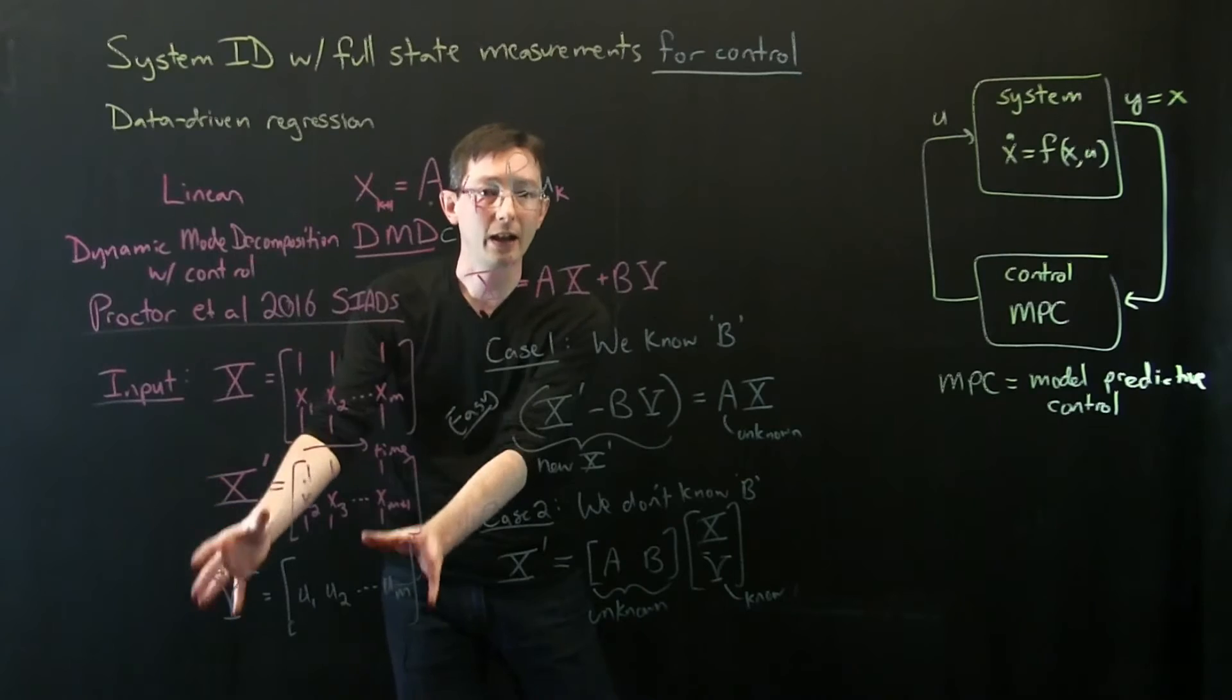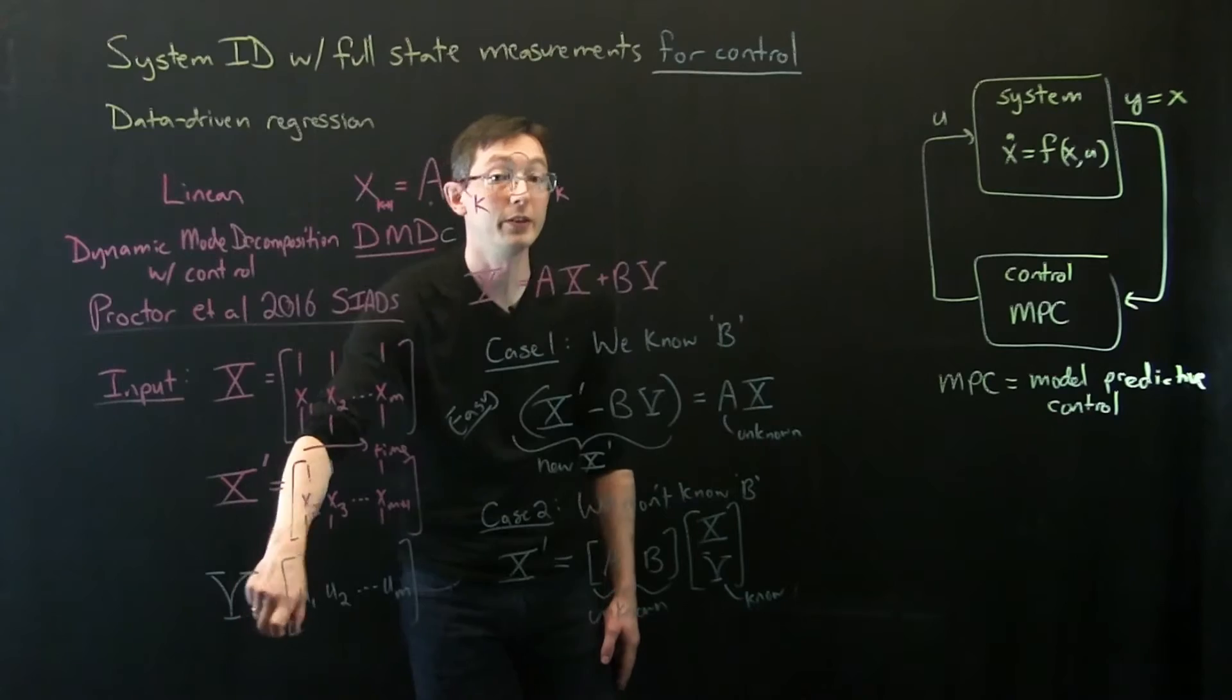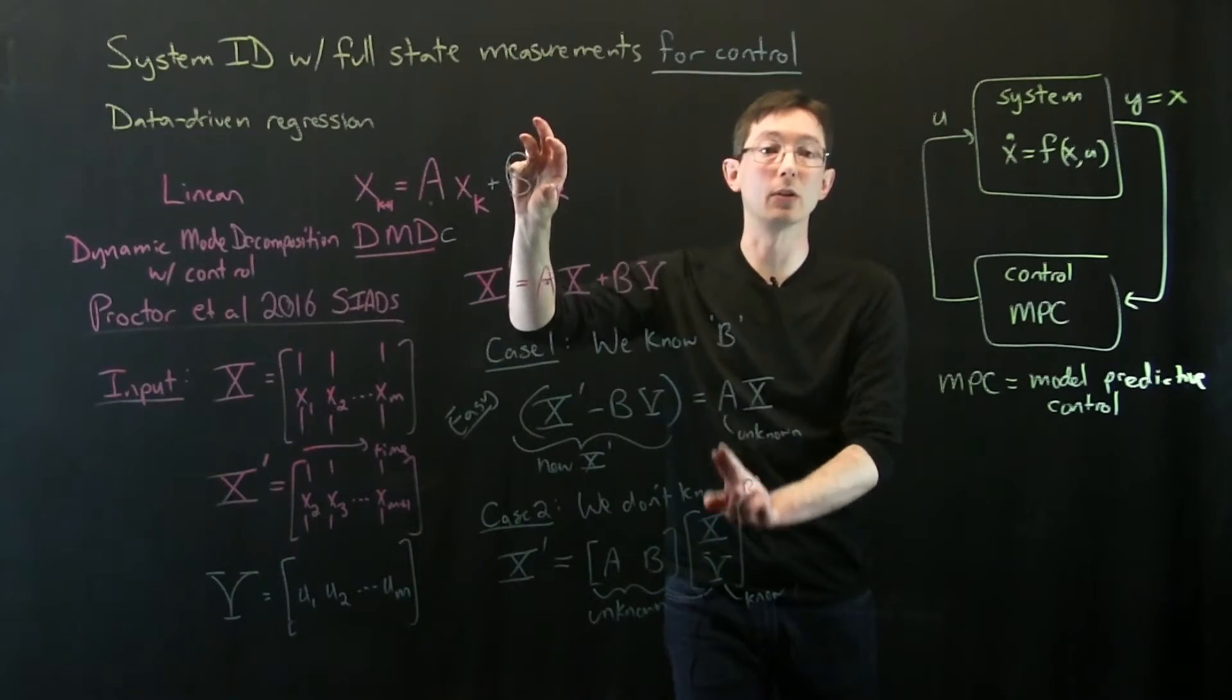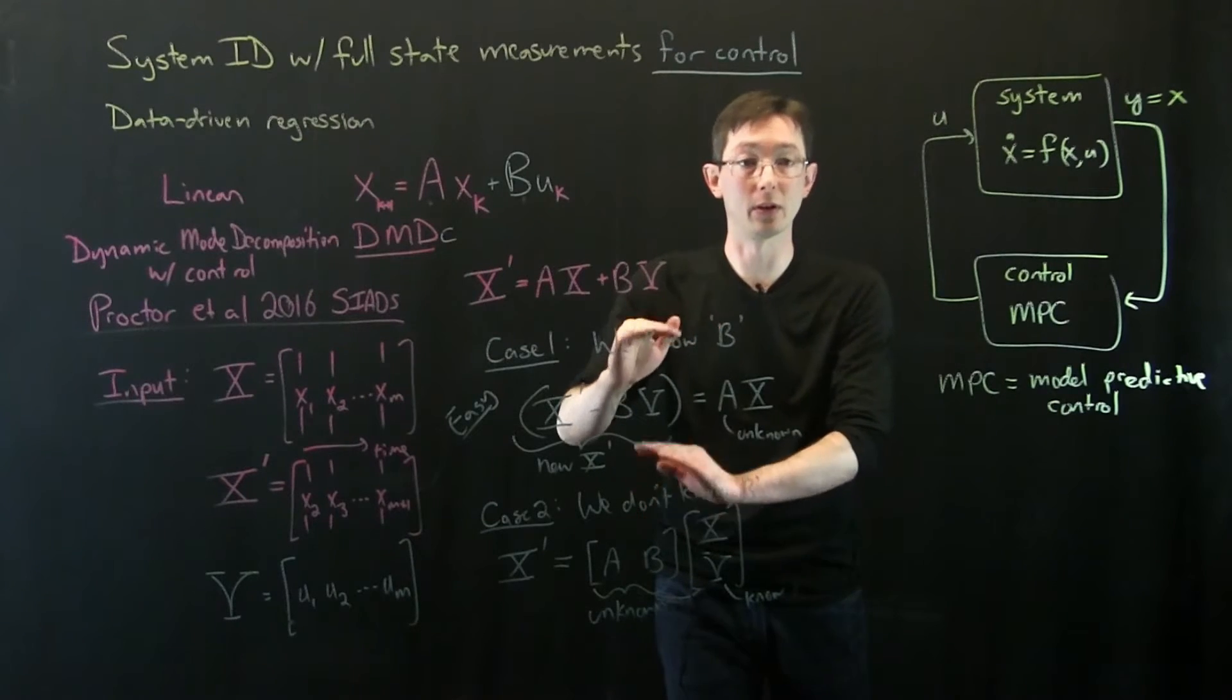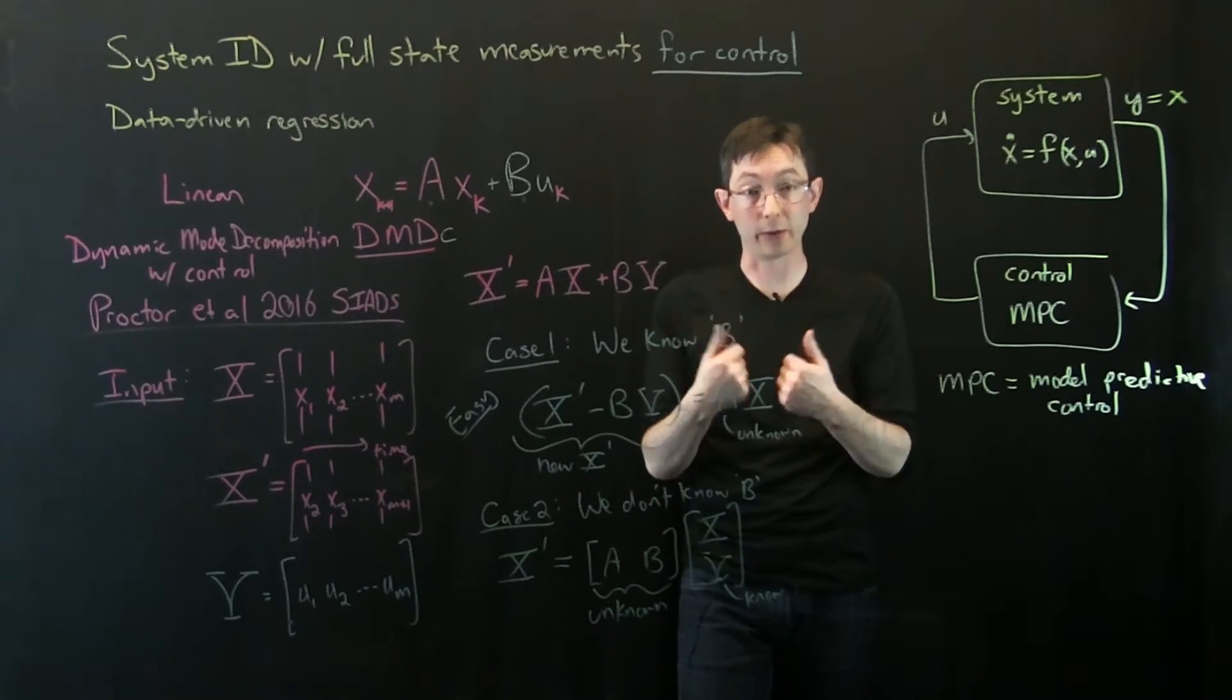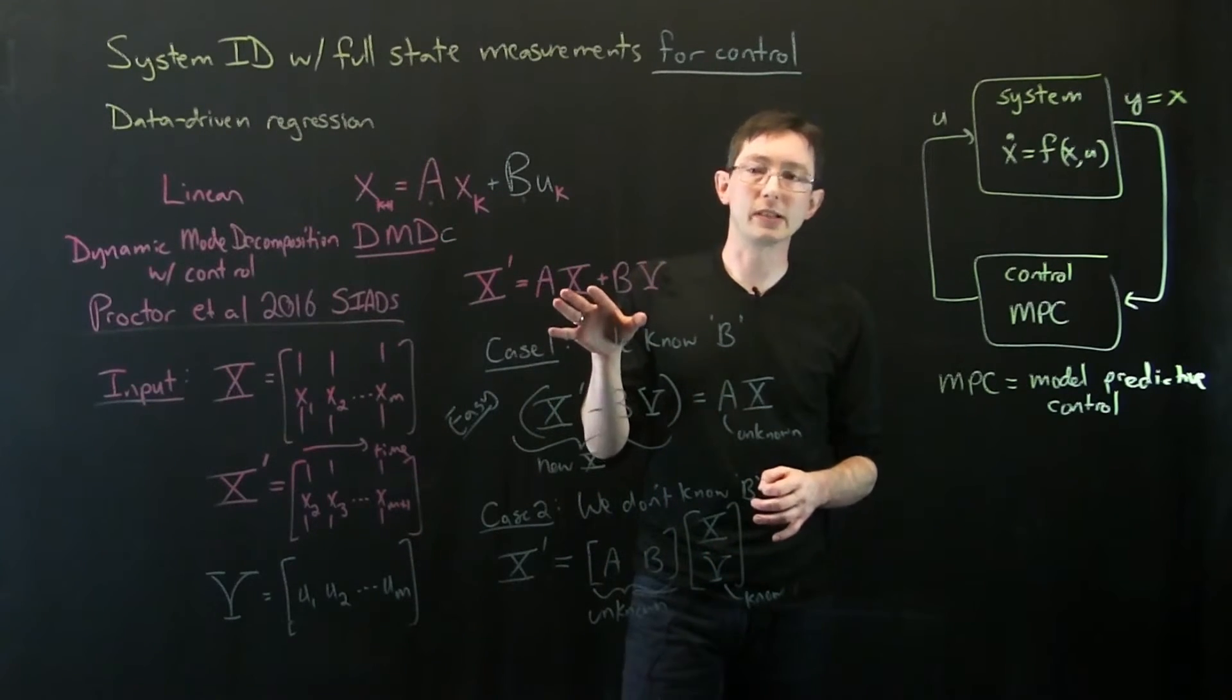So that's kind of the mile high view of dynamic mode decomposition with control. You assume that you have quite a lot of input data of your state as it evolves in time, along with your control input U. And then either if you have B or don't have B, you can solve for the unknown matrices and build a linear reduced order model. Now a couple of things I think are really interesting about this method.